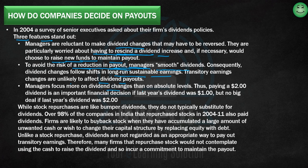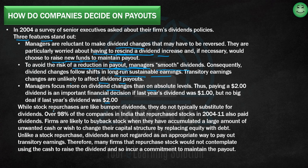Managers focus more on dividend changes than on absolute levels. If a $2 dividend was given last year, maintaining $2 is expected and not a major decision. But deciding to increase it today means you'll have to increase it forever — that's an important decision. And decreasing it sends a negative message to investors — that's also important. A consistent dividend once set is maintained; it's the changes in that decision that are the critical ones.